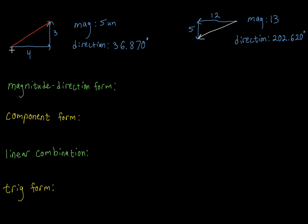I've given some information about each of these vectors — I've gone ahead and given the components. This red vector travels four units to the right and then three units up. So I've got an x component of four and a y component of three. Using the Pythagorean theorem, I was able to figure out that the magnitude was five units. And then using the arc tan, I was able to figure out that the direction of this vector was 36.870 degrees. If you need a refresher on how to do that, there is a previous video telling you about the magnitude and direction of a vector.